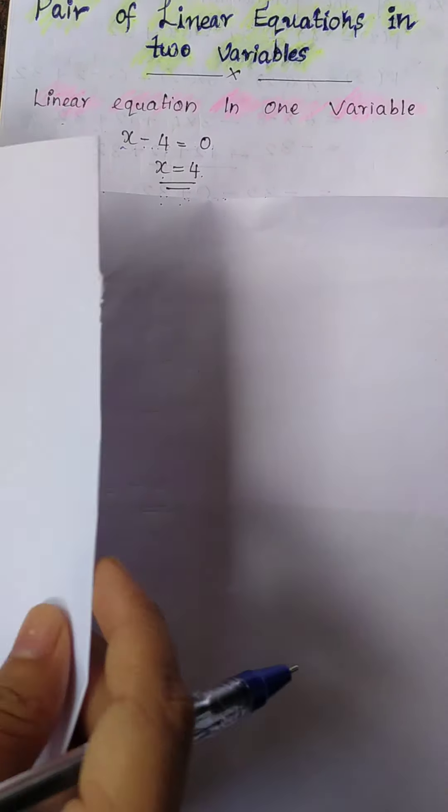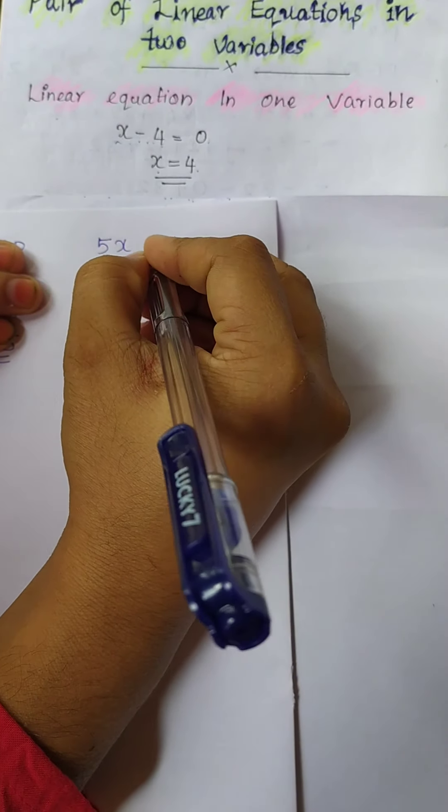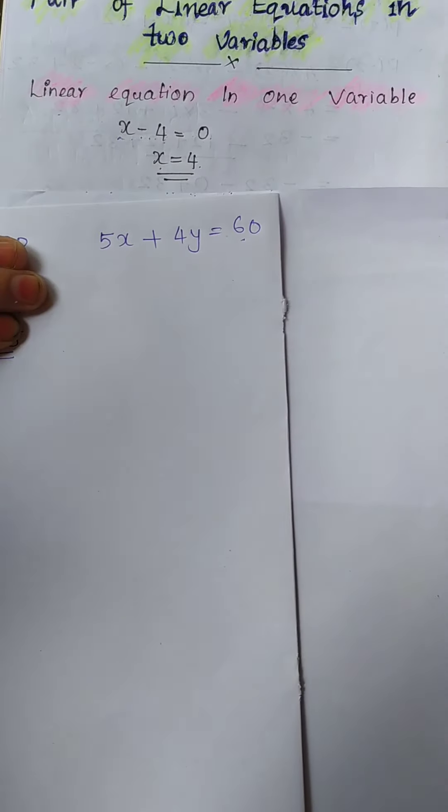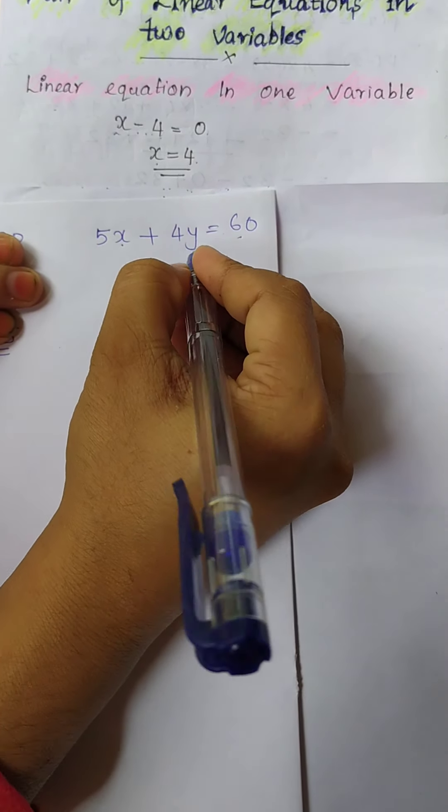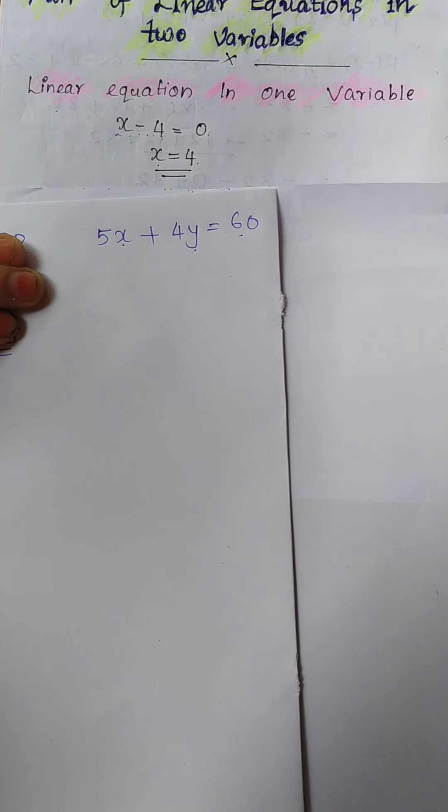Suppose we and our friends went for shopping and bought 5 cool drinks and 4 pencils, and we paid a total of 60 rupees. What will be the cost of one pencil and one cool drink? If such a situation arises, we need to know how to solve a linear equation in two variables. Here, 5 cool drinks plus 4 pencils totals 16 rupees. To share the sum among ourselves we need to find the values of x and y.